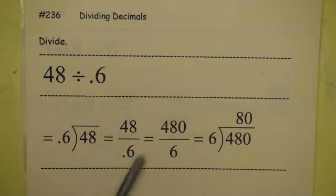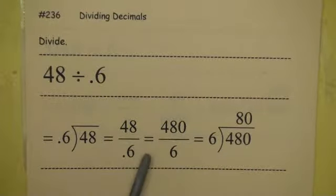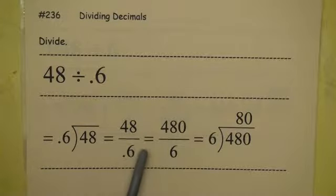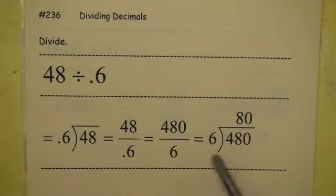Then you can multiply fractions by 1. So we're going to multiply by 10 over 10, which is 1, therefore 480 over 6, which is definitely a lot easier. Therefore, 6 goes into 480 80 times.